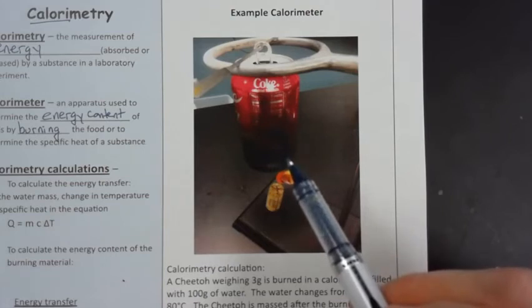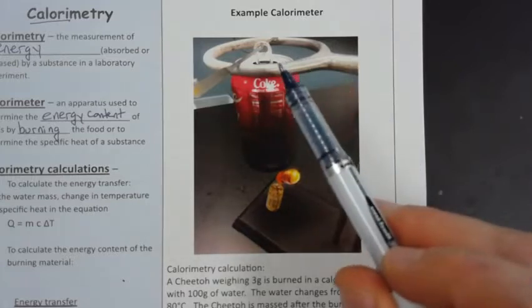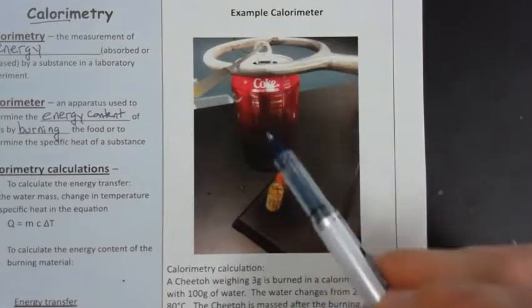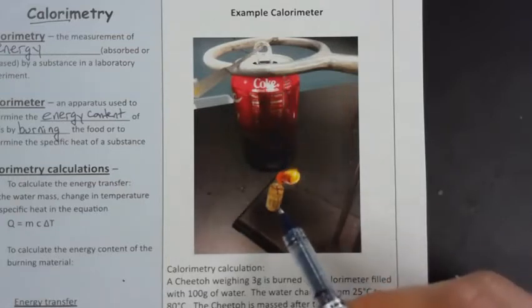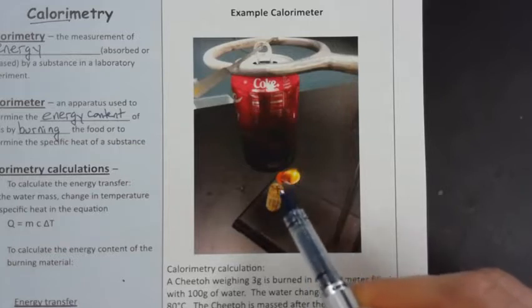We've got this ring stand and a glass bar so that it's kind of hanging over the top of that ring stand. And then down at the bottom here, you notice we've got some kind of a stand - this one's a cork. And then this is actually a Cheeto that has been lit on fire.